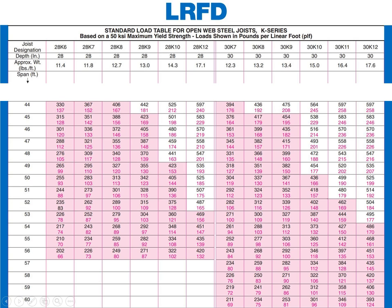A 60-foot span is actually very useful — it allows a column grid under which you can fit parking, since a typical double-loaded parking bay requires about 60 feet of spacing. It also gives great flexibility for office layouts. The K-truss series typically uses bar webs (round bar) or single angle web members, and is generally used for roofing situations.